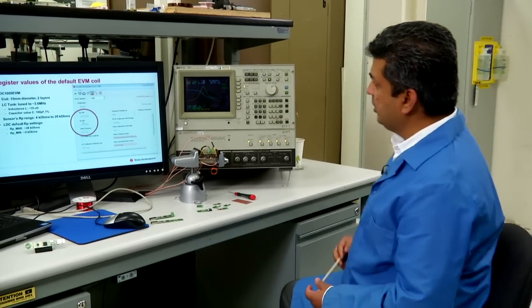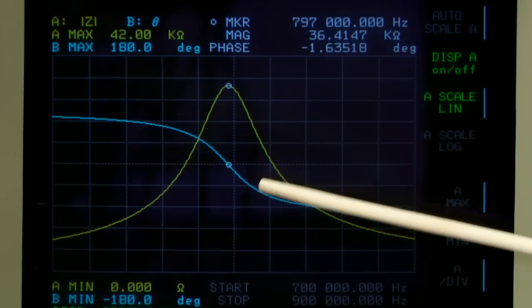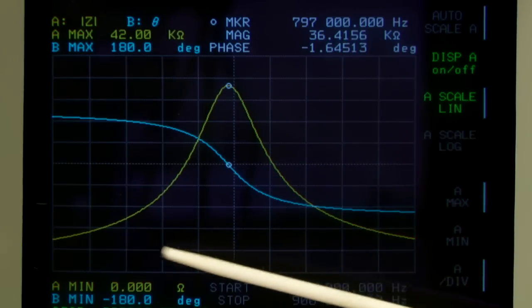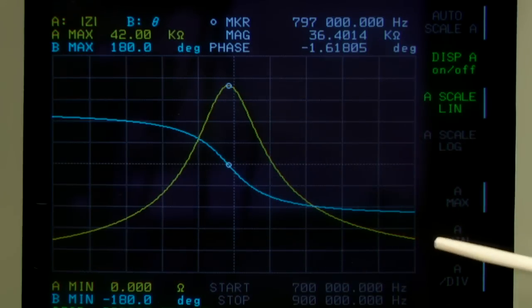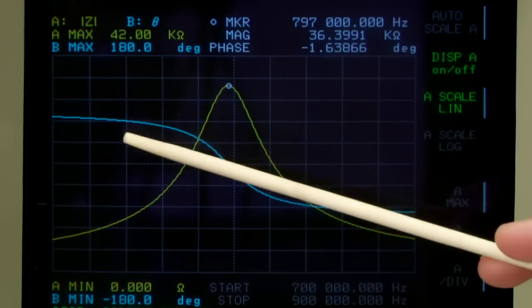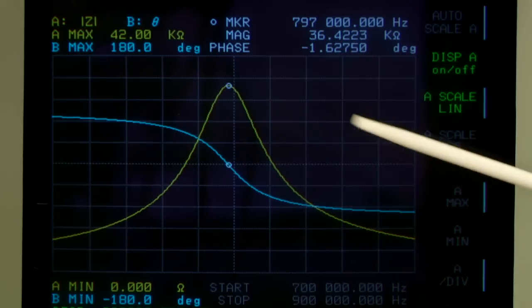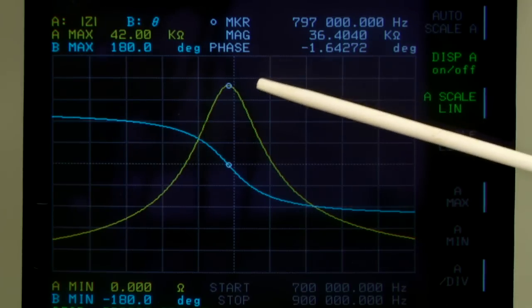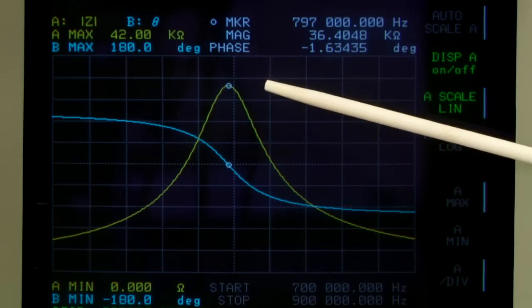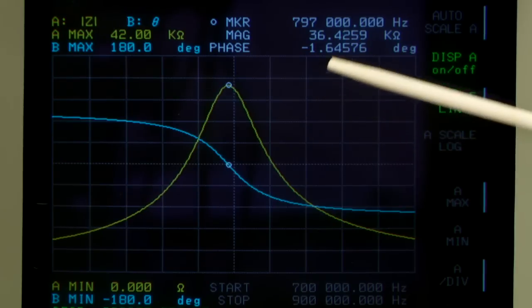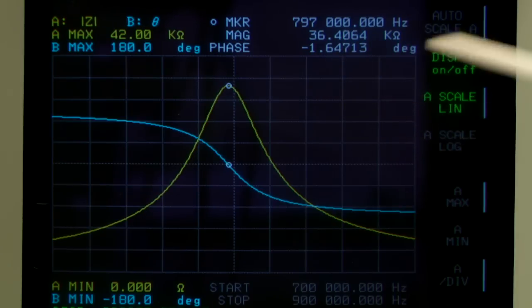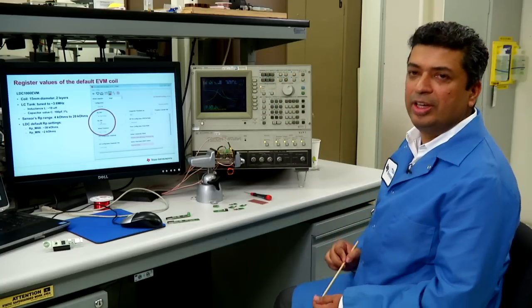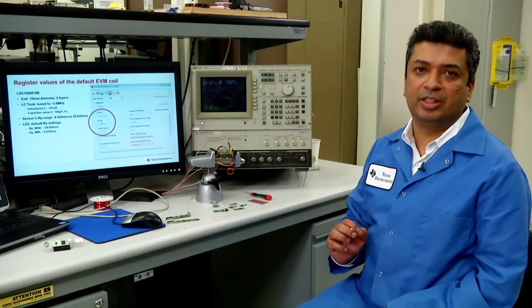What this instrument measures is impedance change over frequency. The yellow trace shows the magnitude of the impedance and the blue trace shows the phase of the impedance. At this particular point, you have the maximum impedance and that is the frequency at which LDC1000 operates. This is also the point where you will have to measure the resonance impedance.